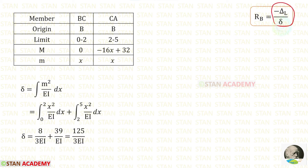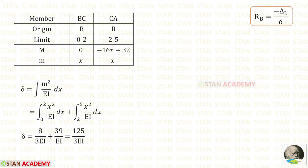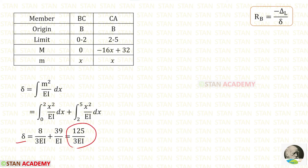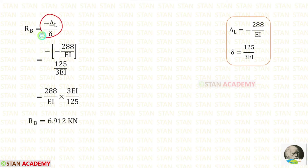Now let us find δ using the formula: δ = ∫(m² / EI) dx. For member BC the limit is 0 to 2, and applying the value of m, and for CA the limit is 2 to 5. Finally, for δ I am getting 125 / (3EI).